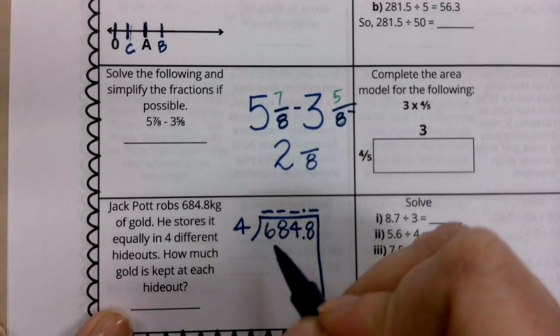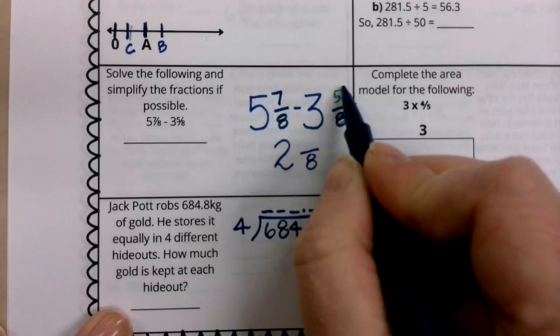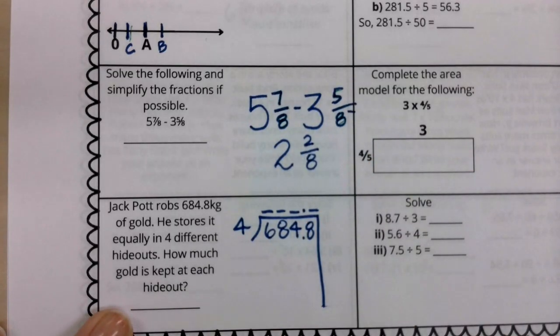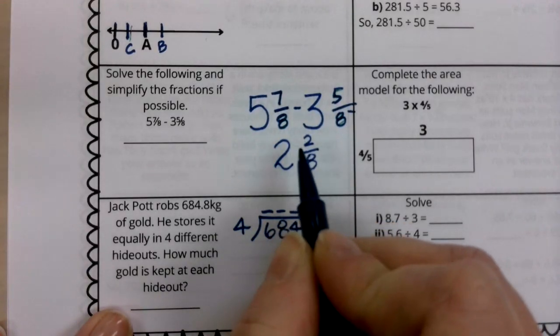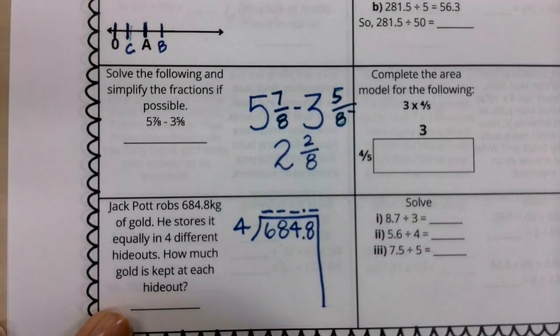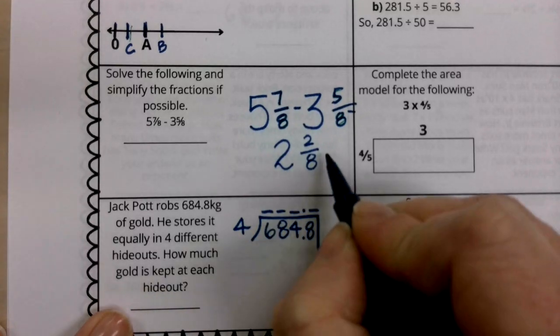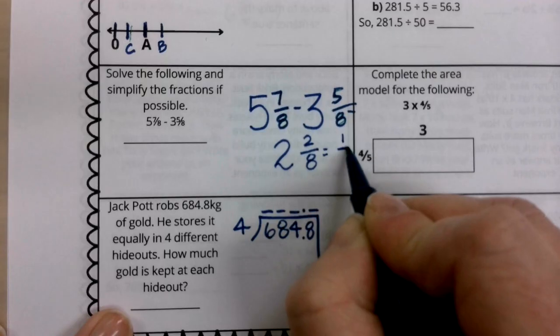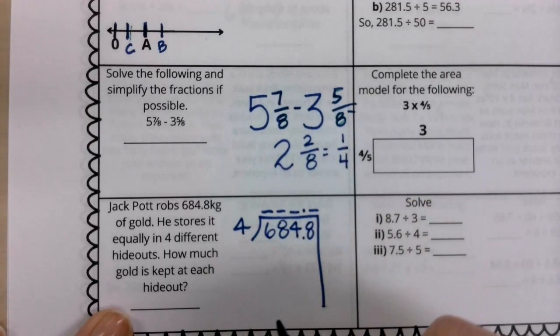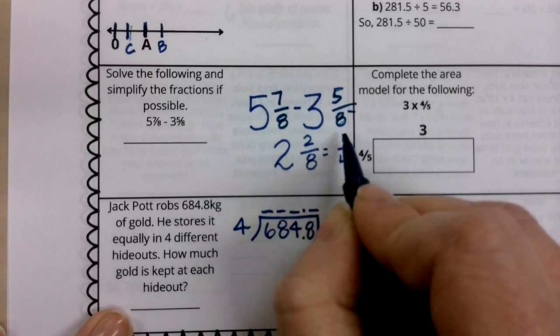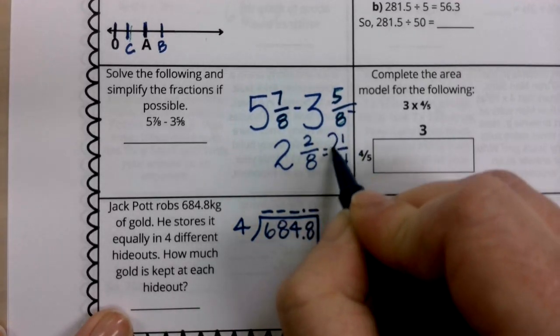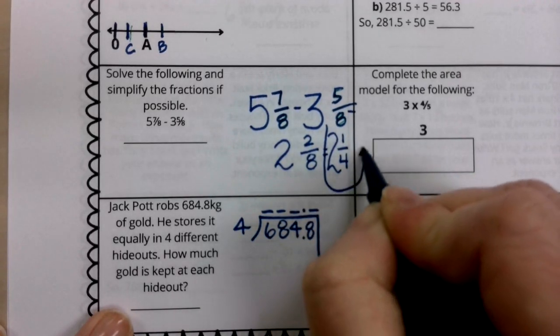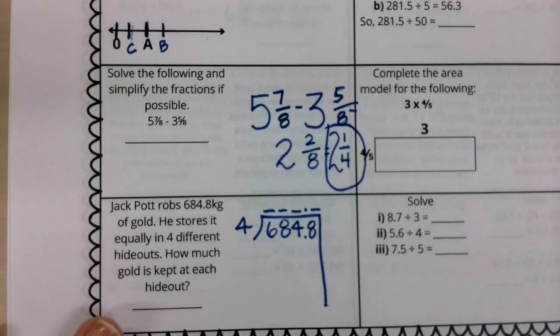And now I'm going to subtract from the numerators. I have seven minus five is two. So my answer here is two and two eighths. Now I know that two and eight are both even numbers, which means they share the factor of two. So I really can make two eighths equal to one fourth because that is like dividing our number by two. Two divided by two is one. Eight divided by two is four. And remember that whole number two stays right there. So that is my answer for that question.